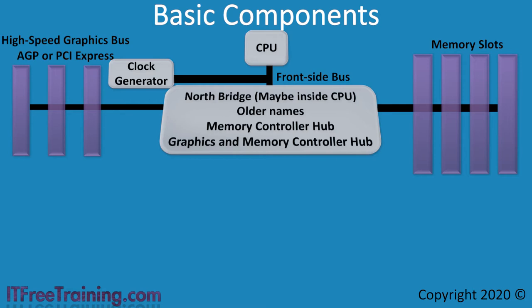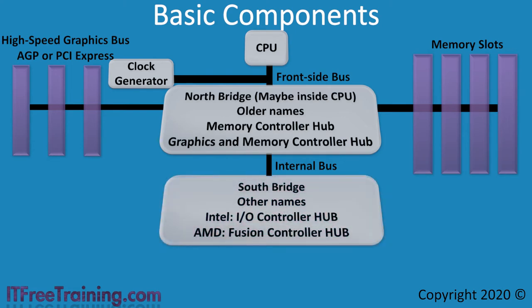In order to connect lower speed devices, the computer uses an internal bus that is connected to the North Bridge. This internal bus is also connected to a chip called the South Bridge. The South Bridge is connected to lower speed devices, which don't have the need to transfer data as quickly and thus there is no need for them to be directly connected to the North Bridge or the CPU. The South Bridge will connect to devices like the PCI bus, mass storage and audio devices.